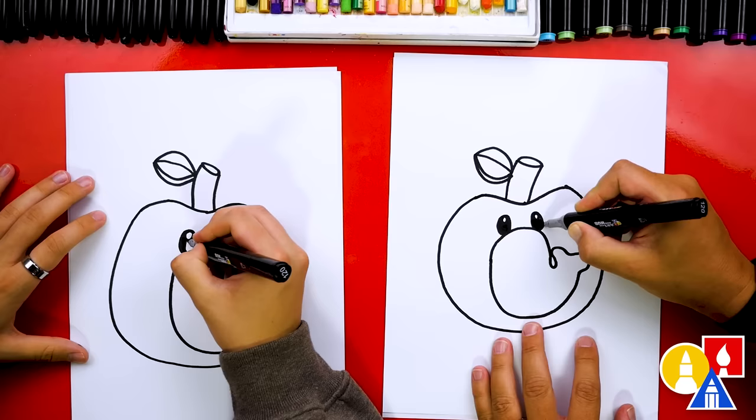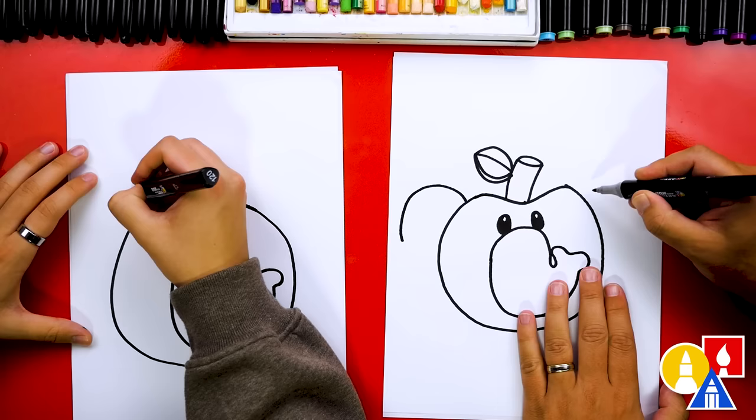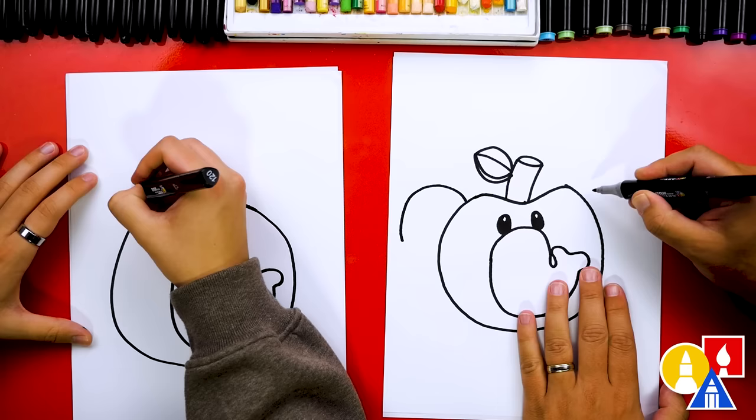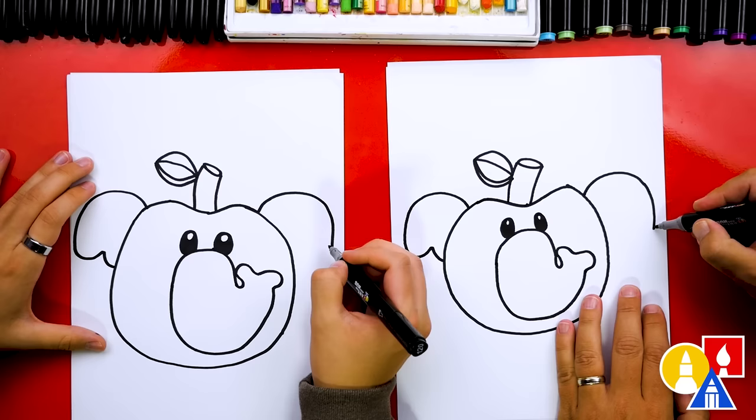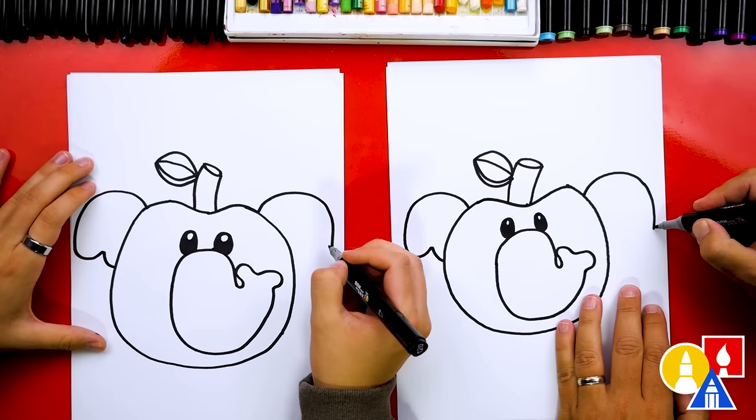Now we're ready to draw the ears. Let's draw a curve coming out to the left, and then curve down about that far. And then we're going to draw that same curve on the other side to match. And then right here at the end, we'll draw a curve coming back up, and then we're going to draw another one coming down again. And then let's repeat that same curve up and back down.